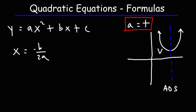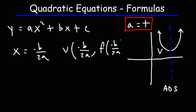You can plug x in to get the y-coordinate. So the vertex is going to be (−b/2a, f(−b/2a)). That's how you can find the coordinates of the vertex if you're given the equation in standard form.